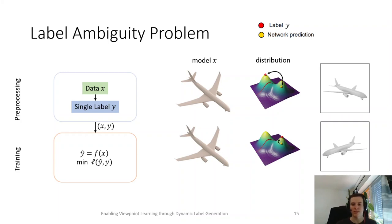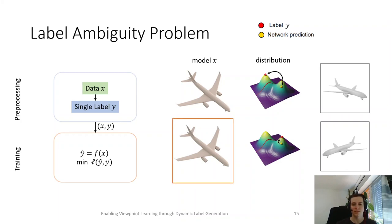In summary, the network will try to minimize the distance to two labels for the same input, resulting in a suboptimal prediction of the network. While this case might be easy to identify in the dataset as the models are identical, imagine that the second model is not completely identical, but is slightly different.